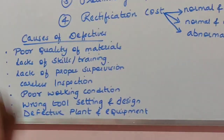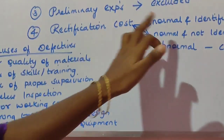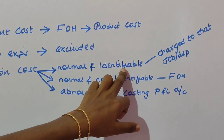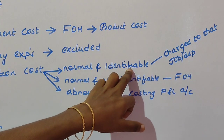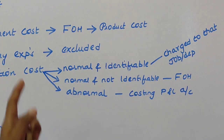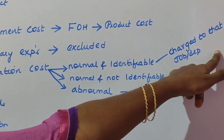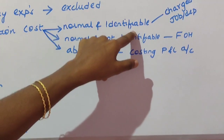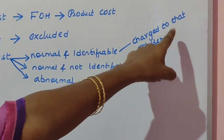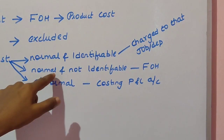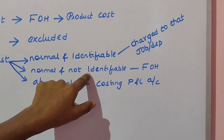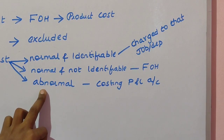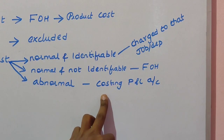Treatment of rectification cost in cost accounting: First, if defectives are normal and easily identifiable — you can identify from which job or department the defective arose — the rectification cost is charged to that particular job or department. Second, if defectives are normal but you cannot identify the origin, it is treated as factory overhead or manufacturing overhead. Third, if defectives are abnormal, the cost is transferred to the Costing P&L account.